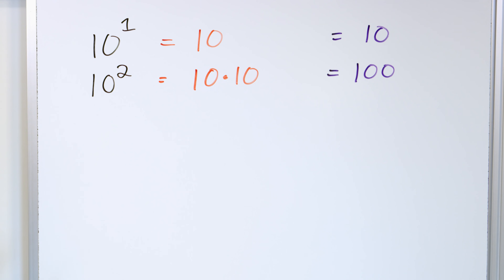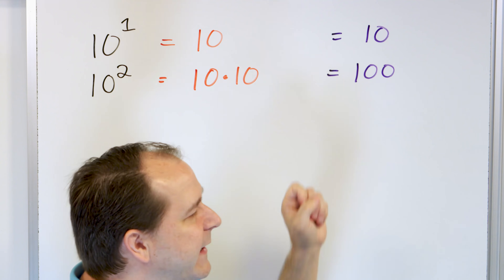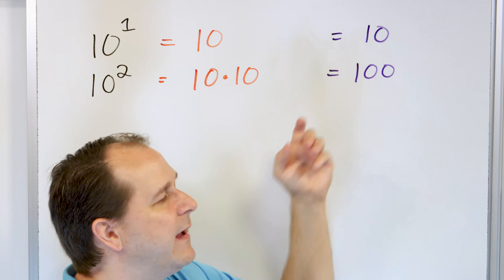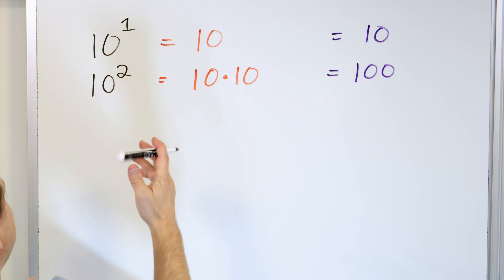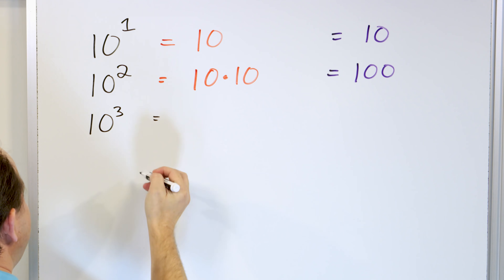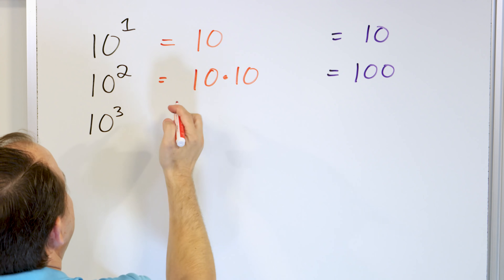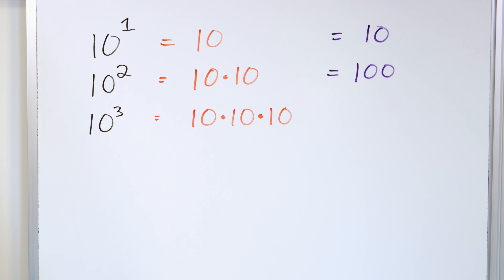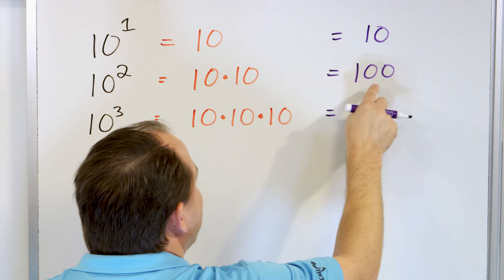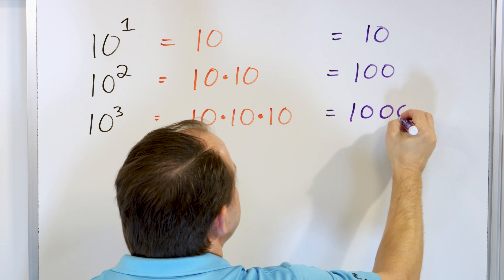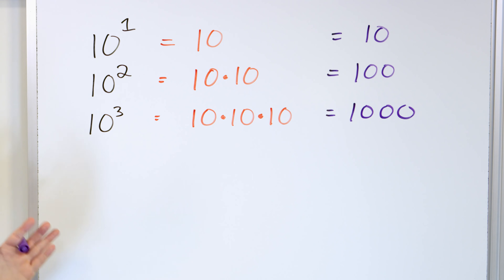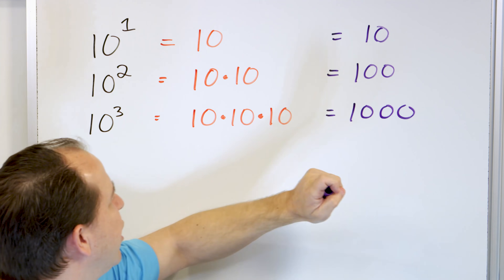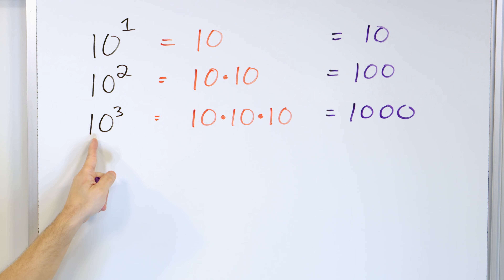What about 10 to the power of 3? That would be 10 times 10 times 10. If 10 times 10 is 100, then 10 times 10 times 10 has to be 1,000, because 100 times 10 is 1,000. So you see the pattern: when 10 is to the power of 1 the answer is 10, to the power of 2 the answer is 100, and to the power of 3 it's 1,000.